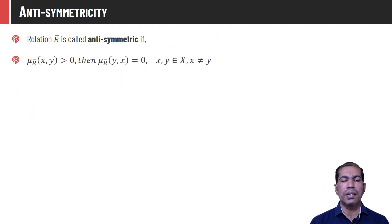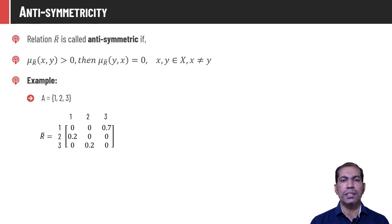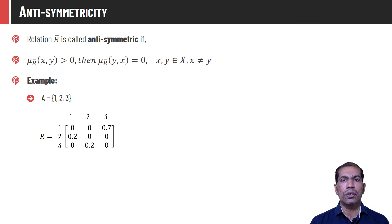Relation R̄ is said to be anti-symmetric if the membership value of any tuple (x, y) in R̄ is greater than 0, then the membership value of tuple (y, x) should be 0 for all x, y in the universe for the given relation R̄. As we can see, the membership value of tuple (2,1) is 0.1, so the membership value of tuple (1,2) should be 0, and it is 0. This should be true for all tuples, which we can verify from the relation matrix, and hence this relation is an anti-symmetric relation.